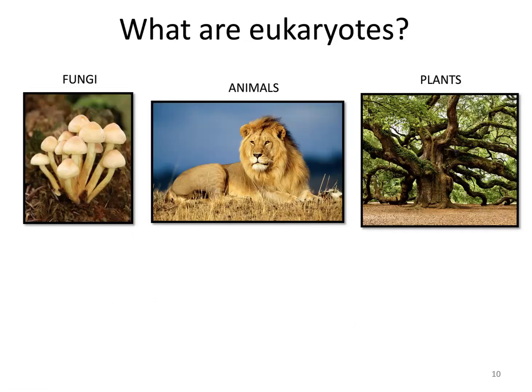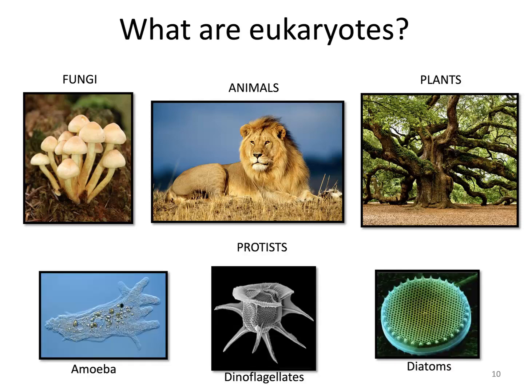When you think of eukaryotes, people typically think of fungi, animals, plants — these charismatic multicellular organisms. However, there are also unicellular eukaryotic organisms, things like an amoeba, a dinoflagellate, or a diatom. These unicellular microscopic organisms are also eukaryotic.